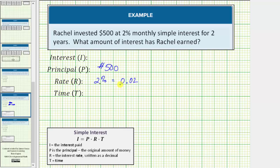It is important to recognize this is a monthly interest rate, which means the time must be in months. Notice how the time is given as two years. So the time is two years, but we must convert this to months. We know there's 12 months in one year, and therefore there's 24 months in two years.